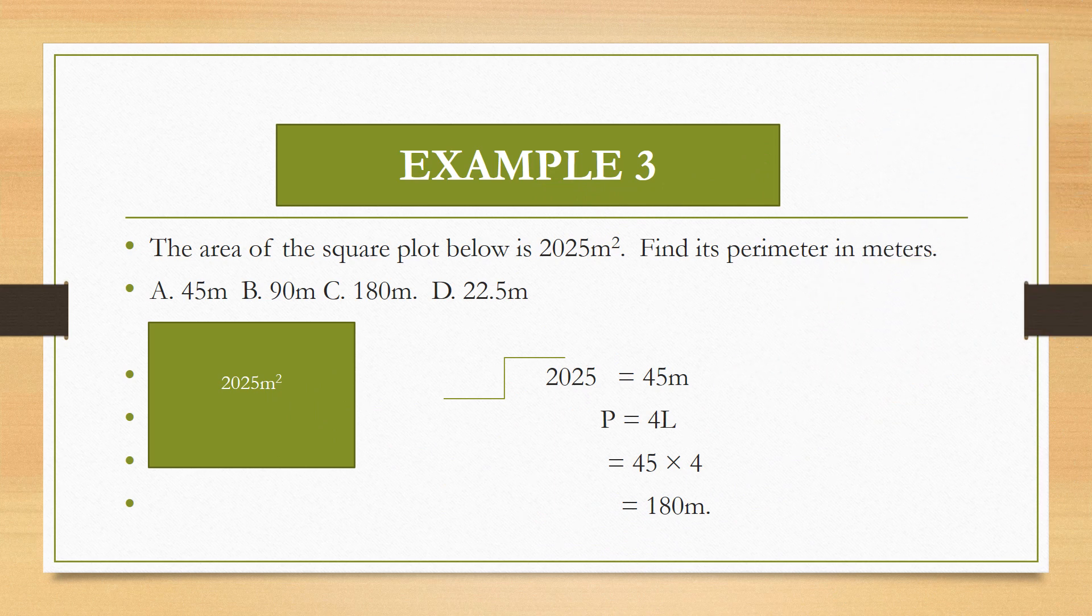Our third example for today: the area of a square plot is 25 meters squared. Find its perimeter in meters. This example is like the previous example. What you need to find first is the square root. Ask yourself: if the area of this square is 25, what is the length of one side? The square root of 25 is 5. I'm warning those who are always in a hurry when they see the answer—they jump and start celebrating, saying 'I've gotten the answer!'